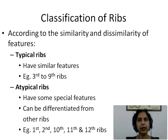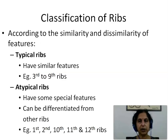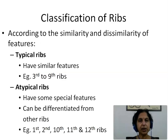Now let us see how we can classify the ribs. There are various ways of classifying them. According to the similarity and dissimilarity of morphological features, the ribs can be classified as typical ribs and atypical ribs. Typical ribs have similar morphological features, examples being the 3rd to 9th ribs. Atypical ribs have some special features and can be differentiated from the other ribs — examples being the 1st, 2nd, 10th, 11th, and 12th ribs.